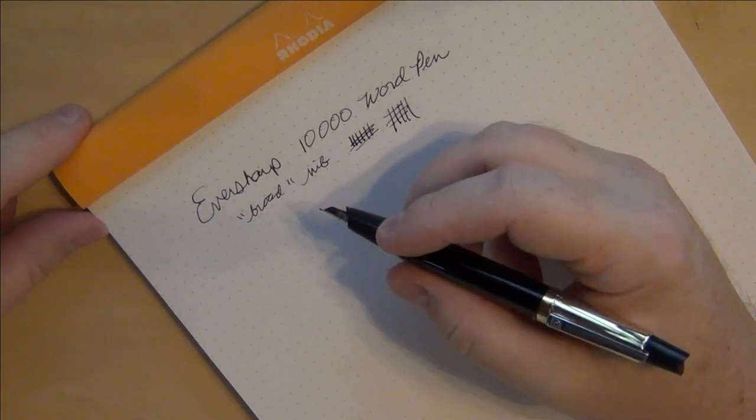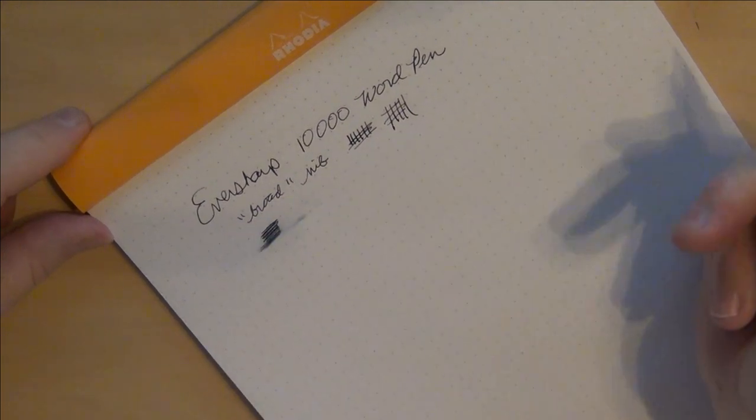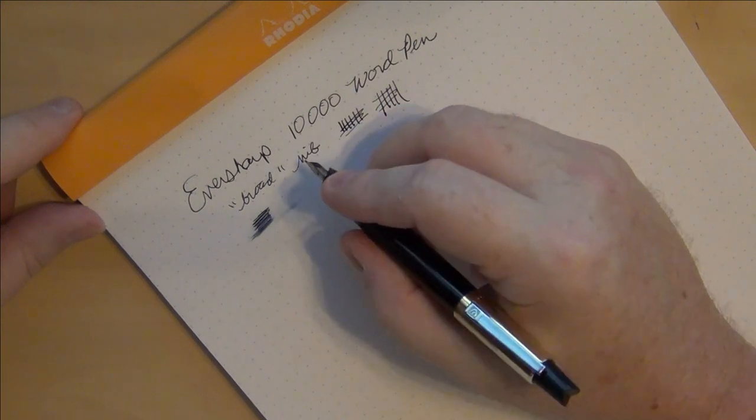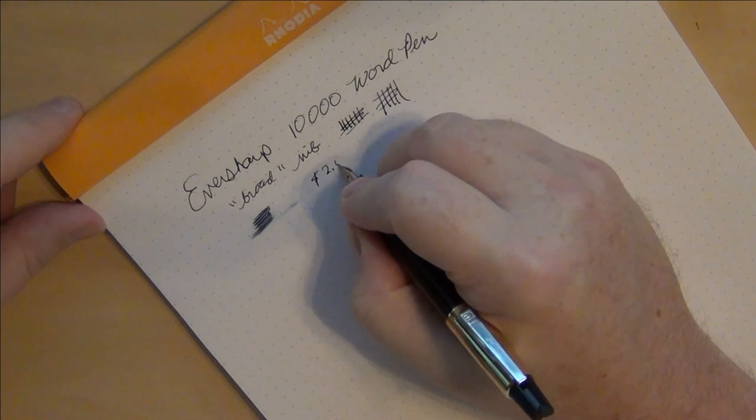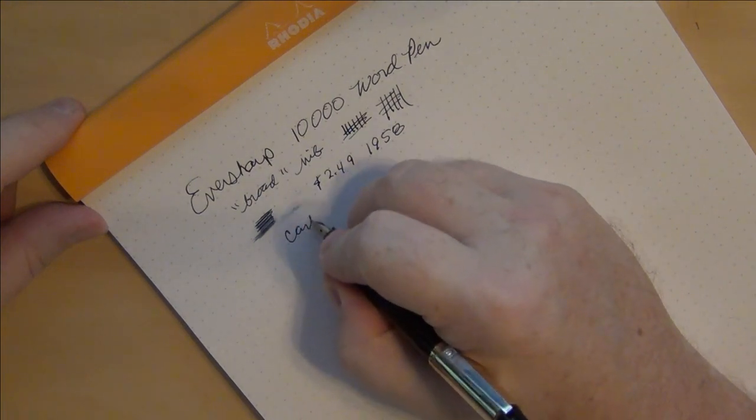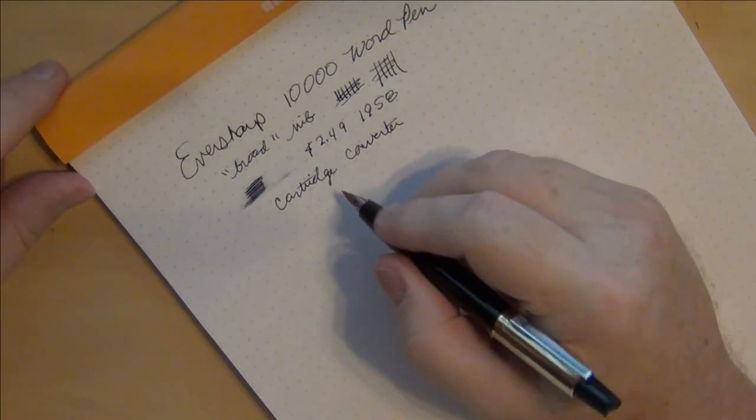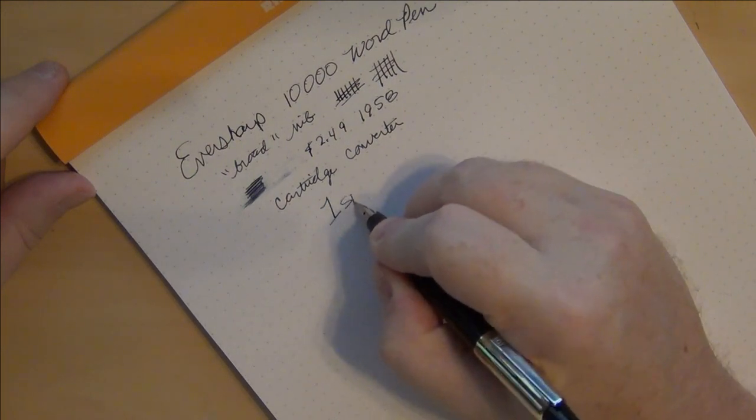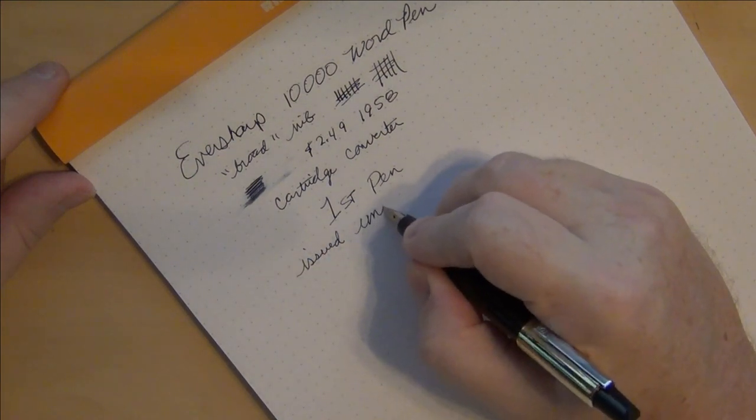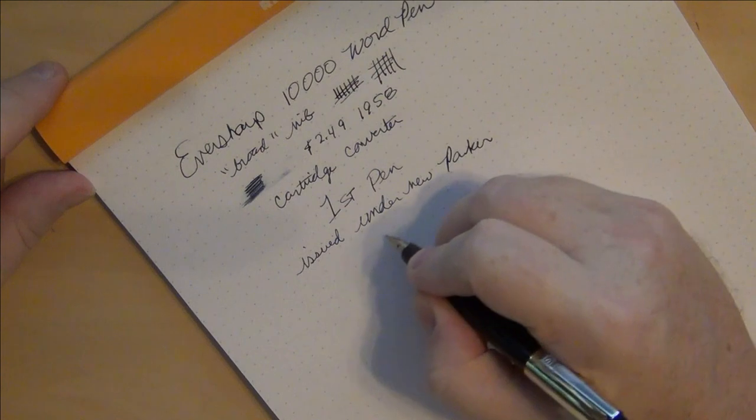Since I've been using this pen, I haven't had any issues with it at all. I haven't had any ink flow problems. I've been doing actually a decent amount of writing with it, but I've been also writing on regular old notepad and on photocopy paper and that kind of thing. This was a $2.49 pen from circa 1958. Obviously a cartridge converter. And historically, this is the first pen issued under the new company, under the new Parker with Eversharp.